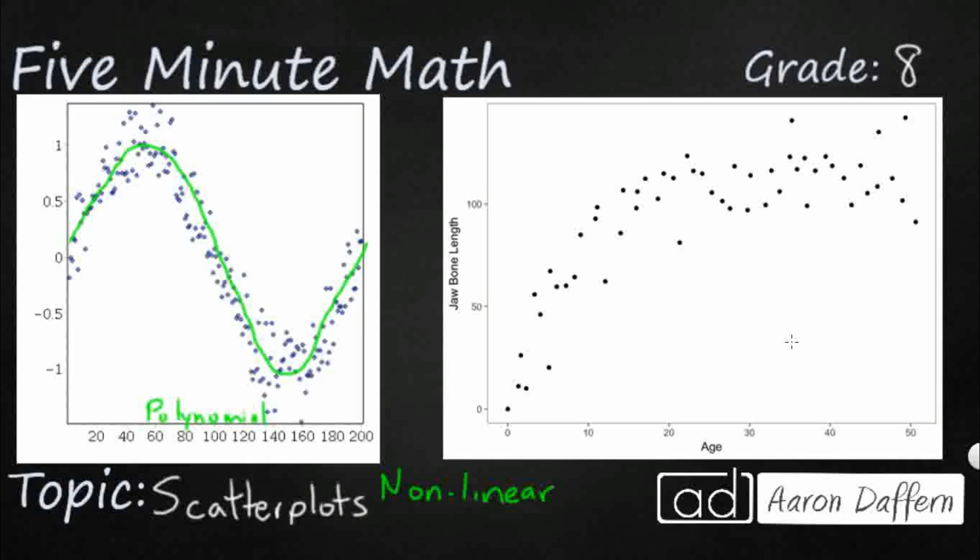Now take a look at this one, jawbone length and age. So this is the jawbone length of probably an animal. And it makes sense that as you grow, it's going to shoot up really quick, but then it kind of flattens out. So it's kind of a curved line like this. You don't keep growing jawbone. Once you get to about 20, you notice your jawbone just kind of stays the same. So this is also a nonlinear relationship, but there is an association that as your age increases, your jawbone length increases until you get to about 20, then it flattens out. So that is a nonlinear relationship.